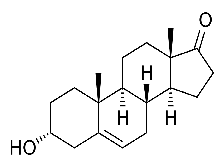DHA is produced in and secreted from the adrenal glands, along with other weak androgens like DHEA, androstenediol, and androstenedione.